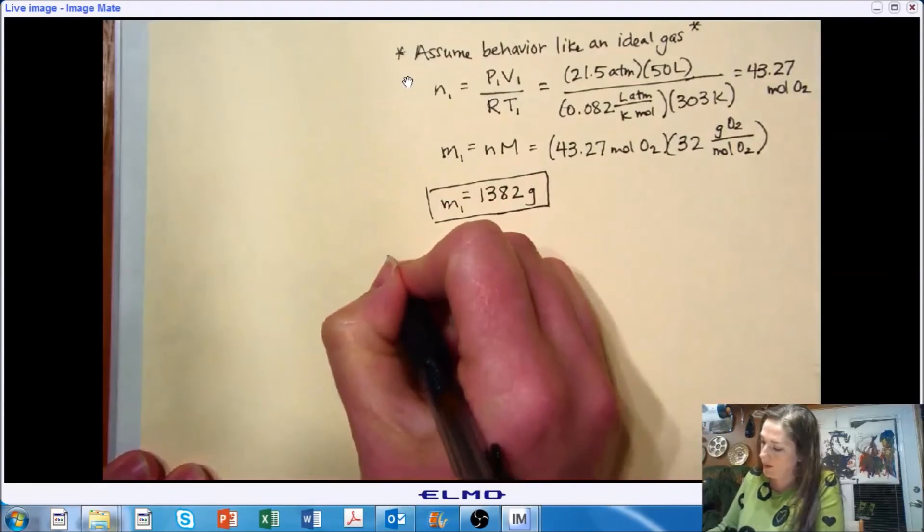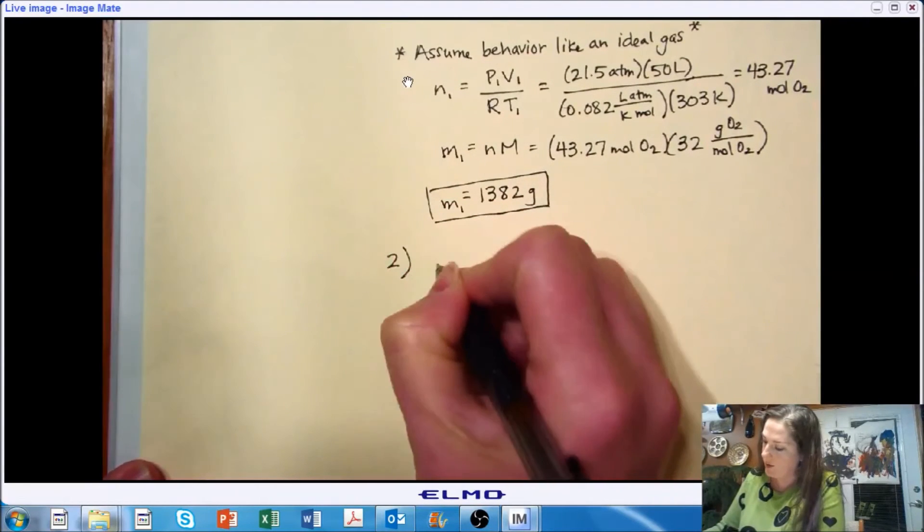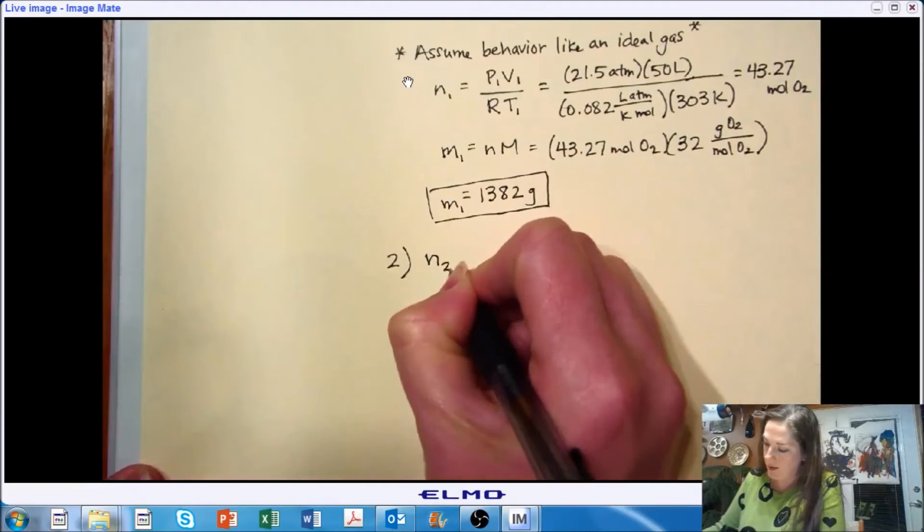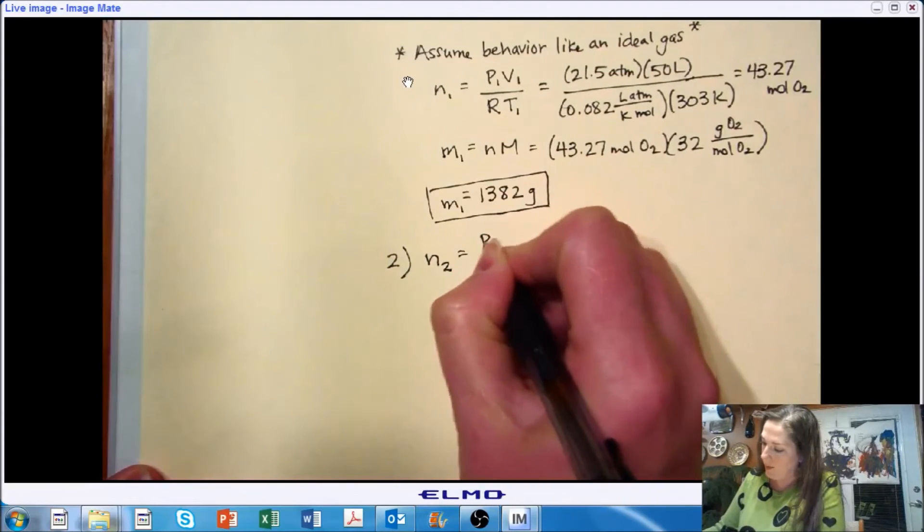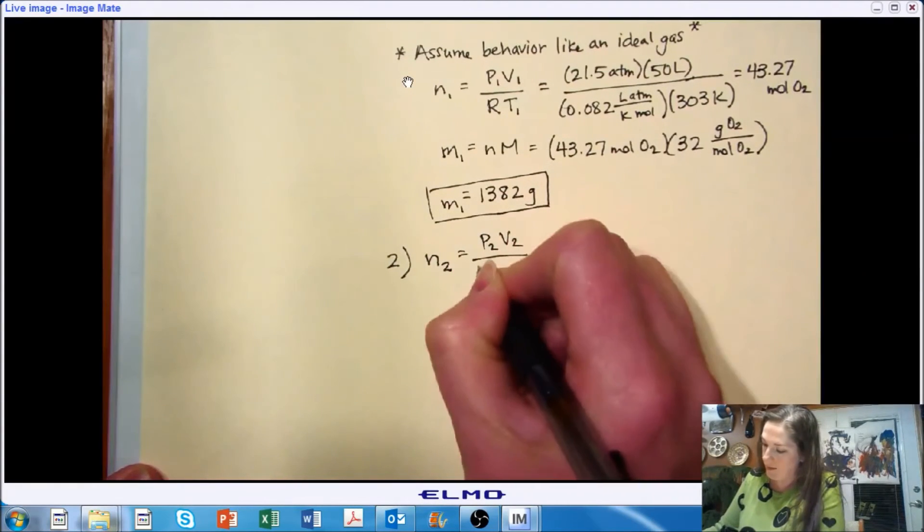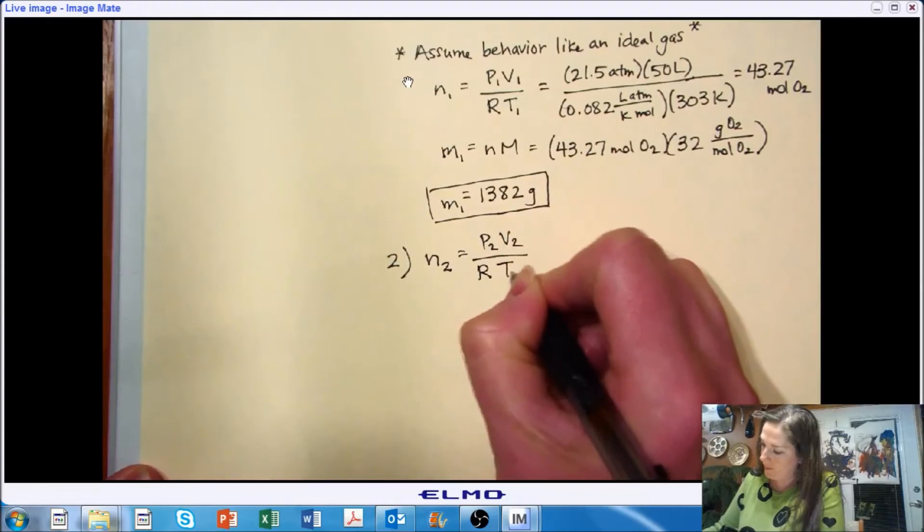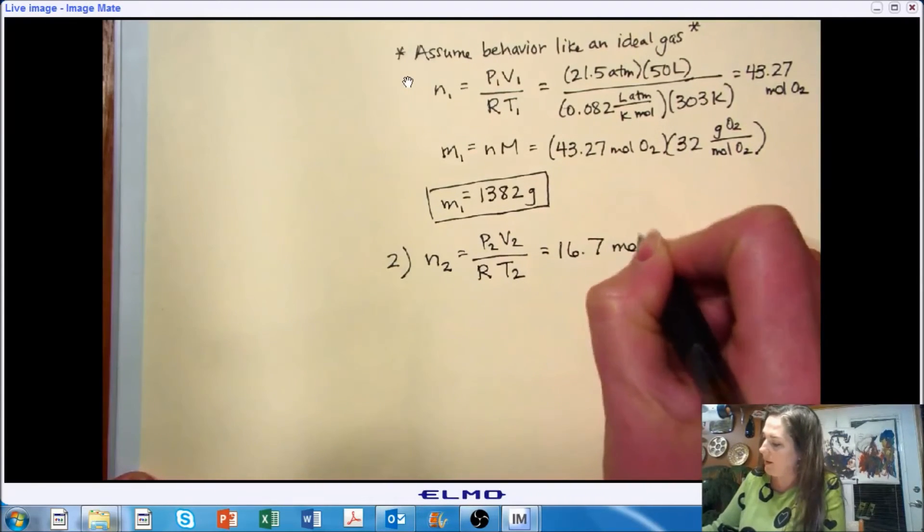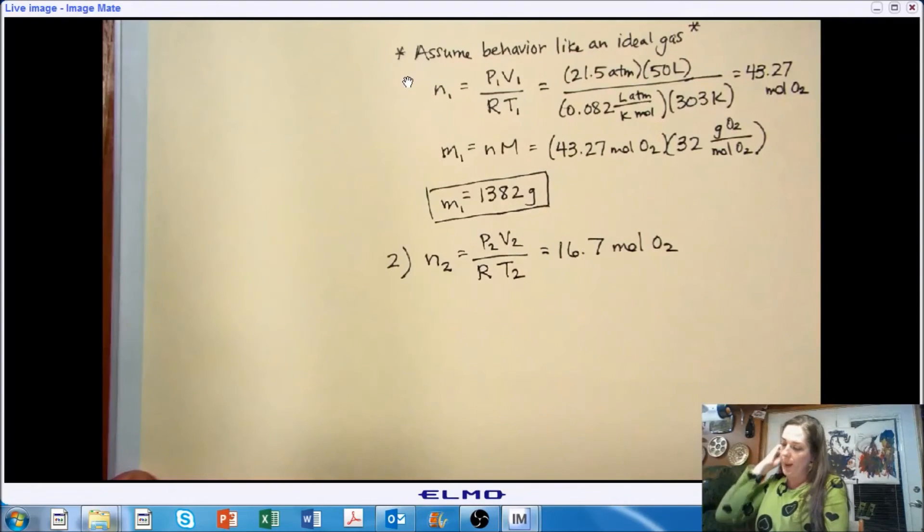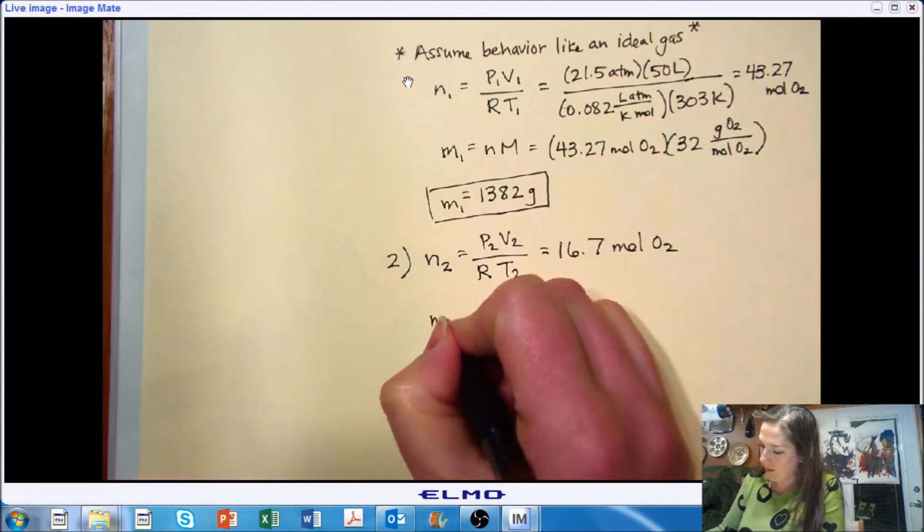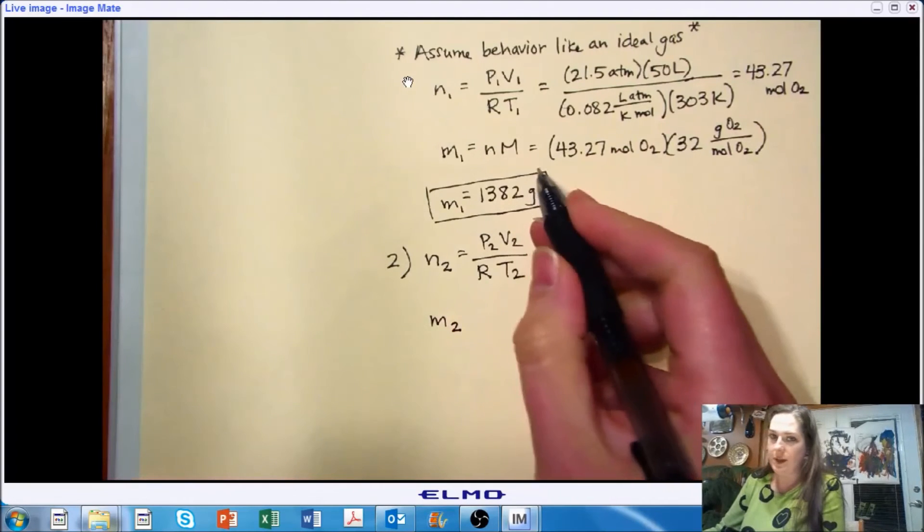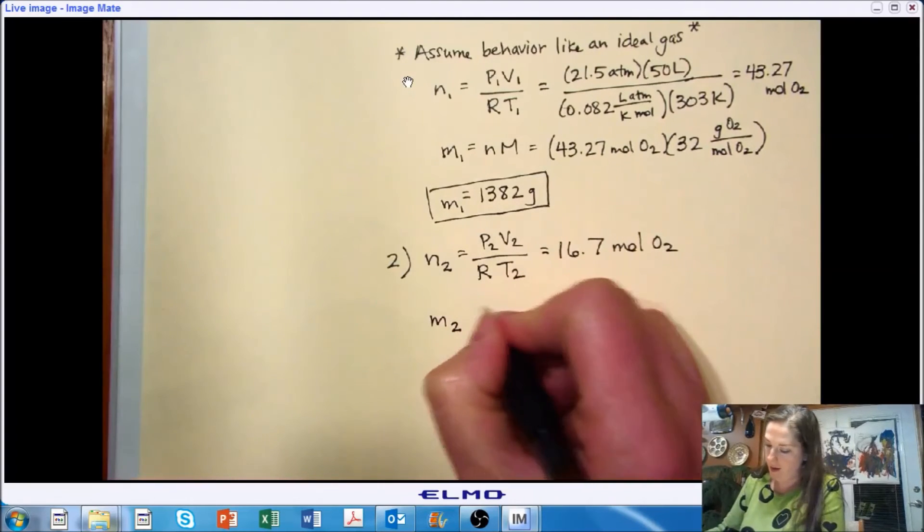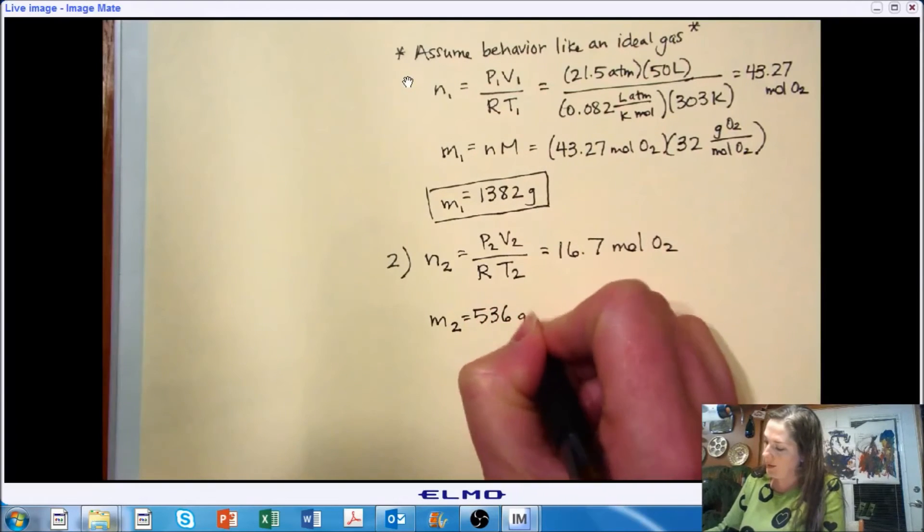Okay, and then we are going to apply essentially the exact same methodology. Let's get the number of moles. 16.7 moles of O2 at the end. And if we follow the same approach again, we'll get that the final mass is 536 grams.